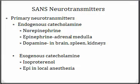Other neurotransmitters are used as well, including epinephrine, which is released by the adrenal medulla — the middle of the adrenal gland, which sits on top of our kidneys — and also dopamine, which is found in our brain, spleen, and kidneys. These neurotransmitters are referred to as endogenous catecholamines. Endogenous means it originates from within an organism.